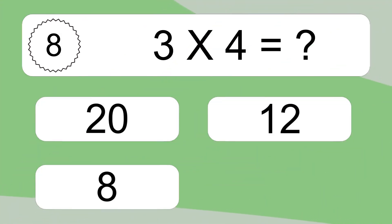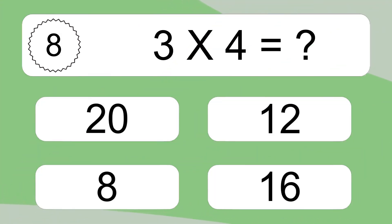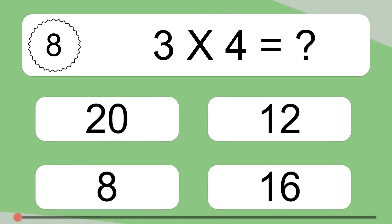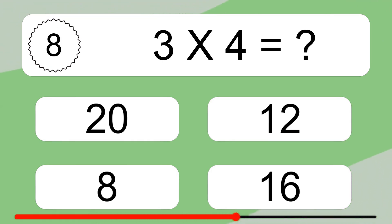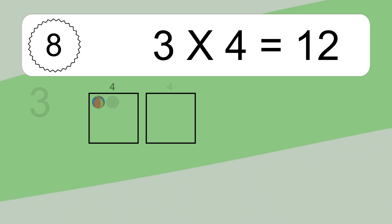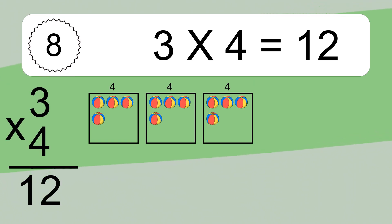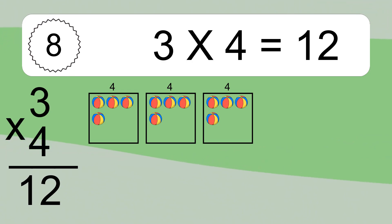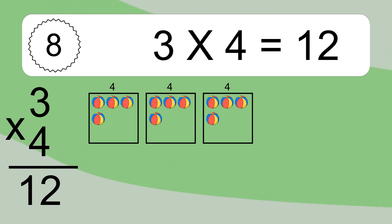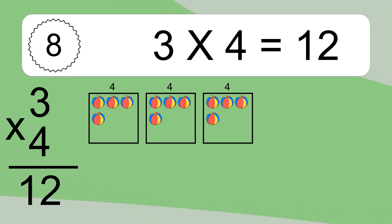3 times 4 equals what? 3 times 4 equals 12. We have 3 boxes, and each box has 4 colorful balls inside. If you count all the balls in all the boxes together, you will have 3 times 4 balls. This equals 12 balls.